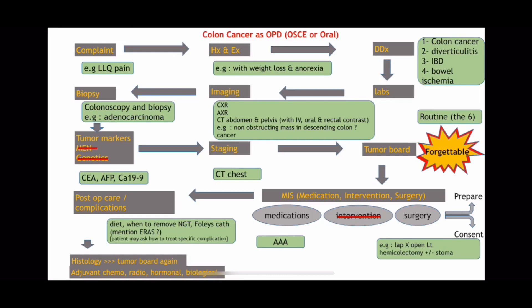After surgery, the next step is histology. Once you have the final histology, you have to discuss it in the tumor board again. The next step is to decide whether the patient would need adjuvant chemotherapy. Radiotherapy, hormonal, or biological therapy are not applicable in this scenario — they will be needed later for breast cancer, where we will use the same algorithm.